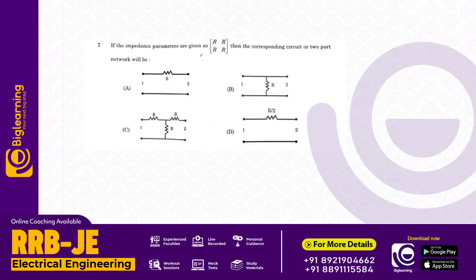If the impedance parameters are given as a 2 by 2 matrix, the corresponding two-port network will be... The answer is B: one by R, one by R.